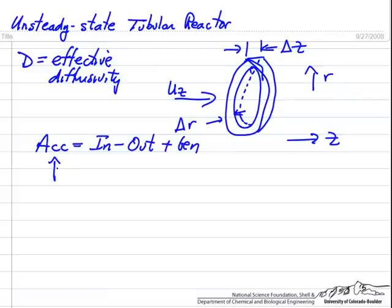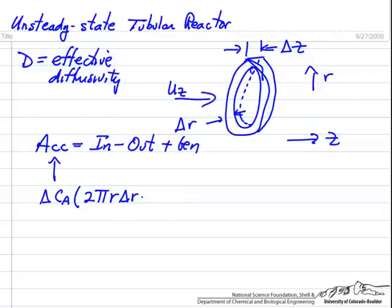In some increment of time, the concentration within this volume will change. Keep in mind it's a small delta z and delta r, so this change is some small change. The volume we're looking at is 2πr · delta r · delta z — that's the volume of this annular region. 2πr is the circumference, then delta r and delta z give us the area.